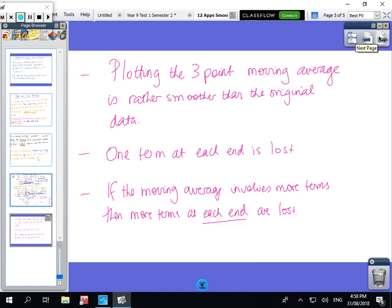If you want to plot the three point moving average, rather than having randomness you get a lot more of a smoother line in the data. Obviously we're going to lose one term at each end because the first term doesn't have a term before it and the last term didn't have a term after it. So you're going to lose terms on either side.